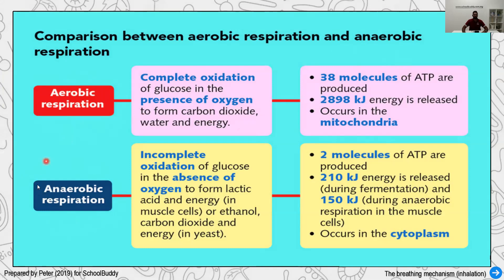In anaerobic respiration there is no oxygen, and it mostly takes place in the muscles. In the case of yeast, a unicellular fungus, yeast will produce ethanol as the product. Comparable to aerobic, anaerobic will produce less energy — just about two ATP molecules — and this process happens in the cytoplasm of the cell, whereas aerobic happens in the mitochondria.